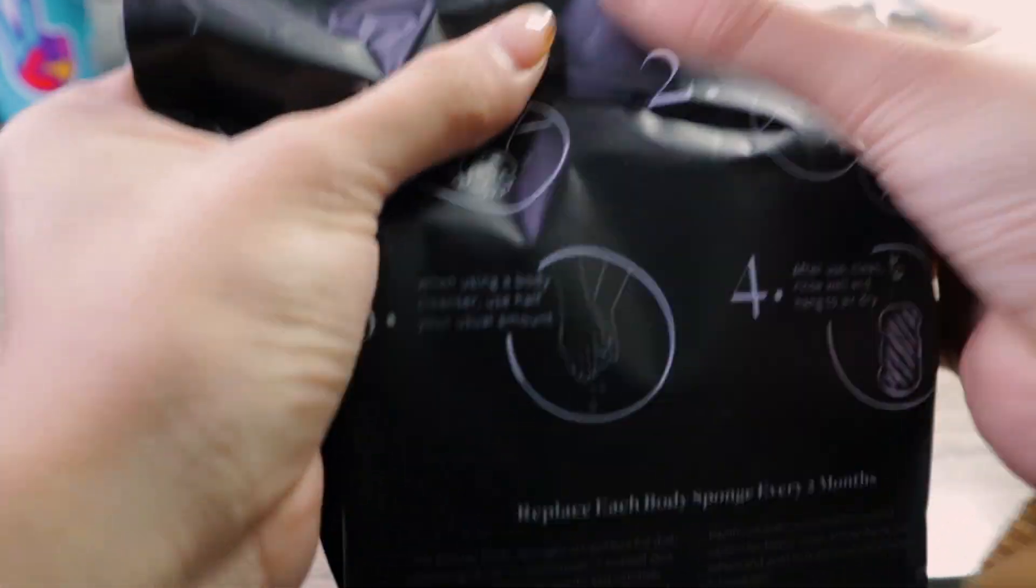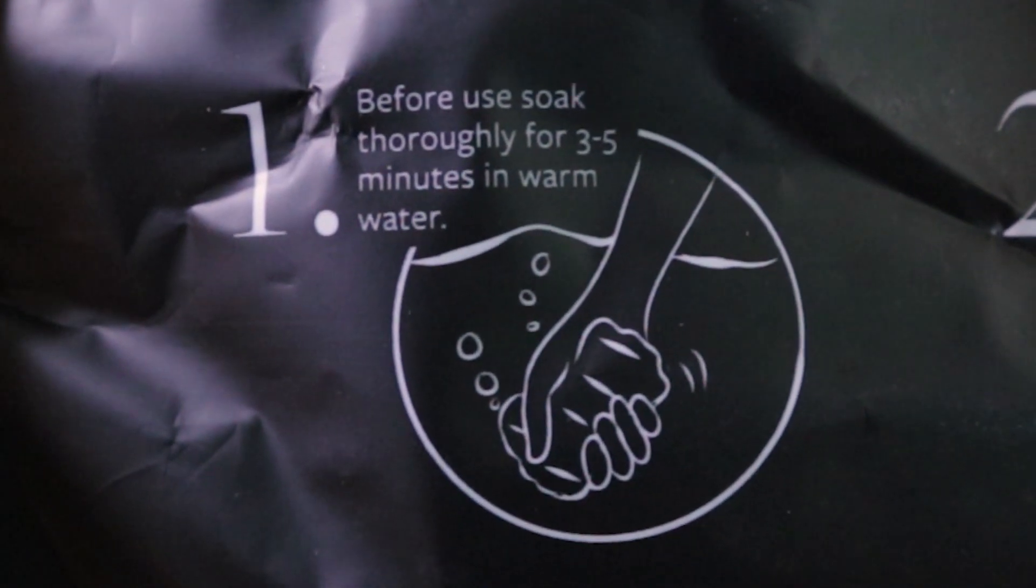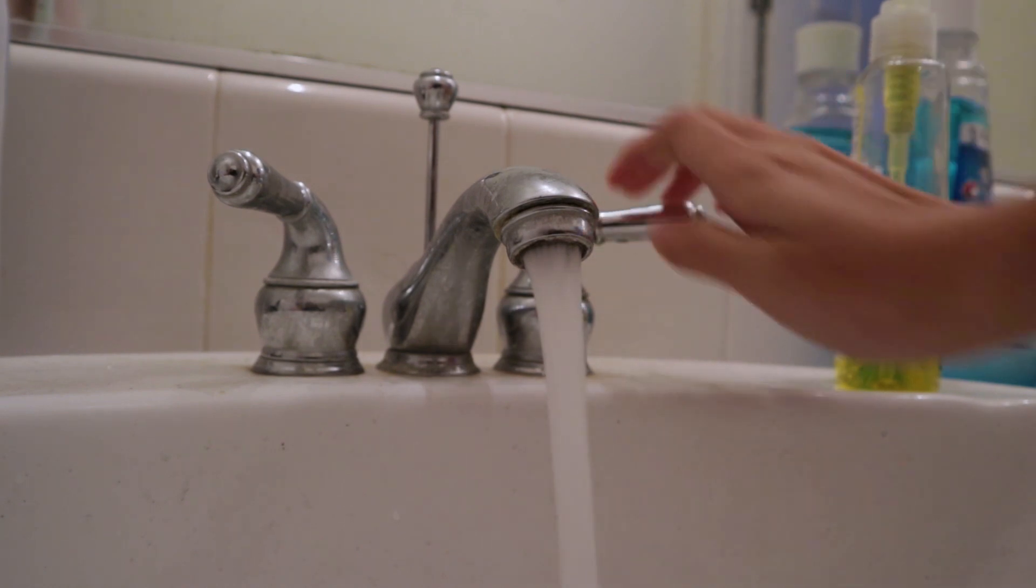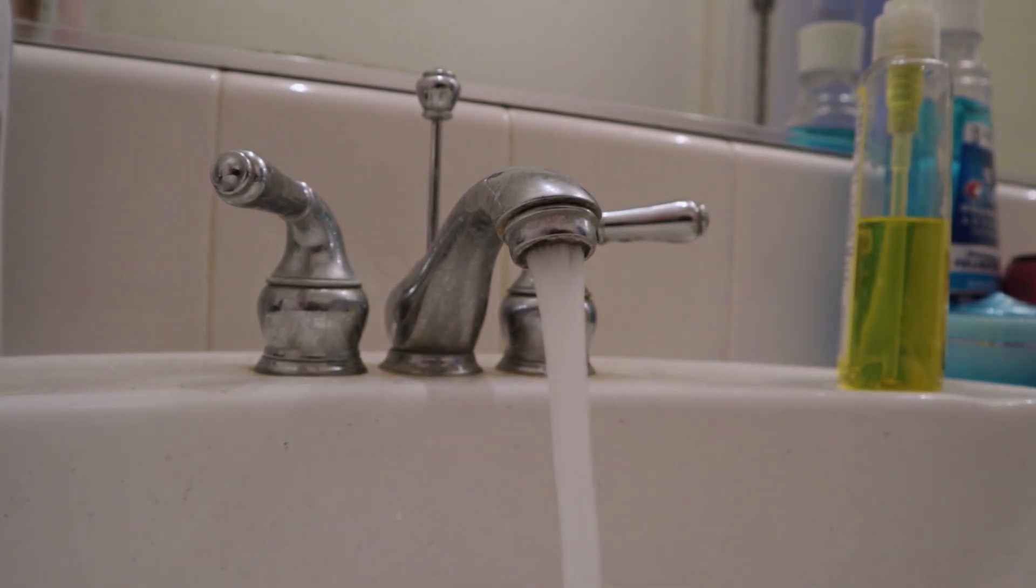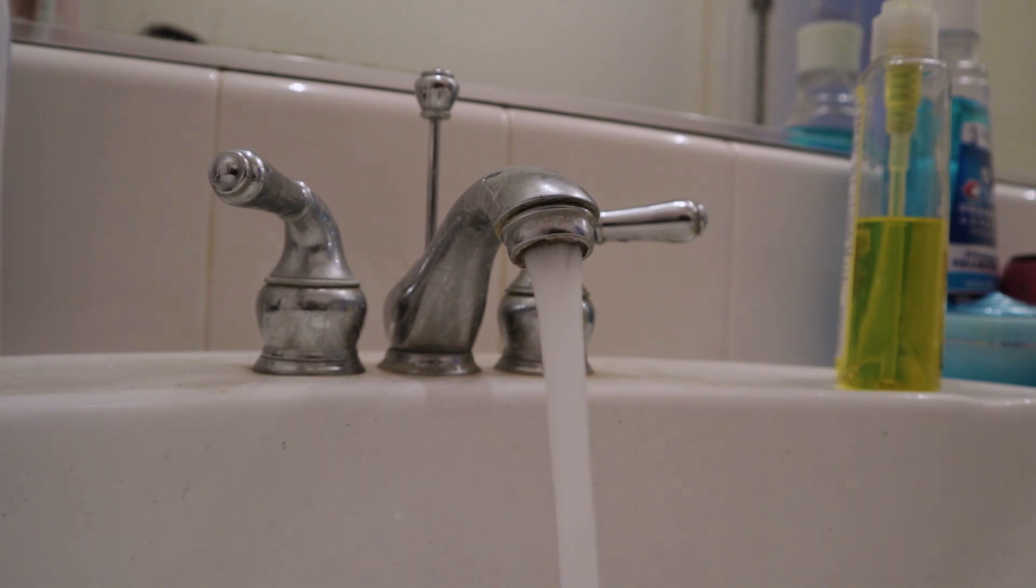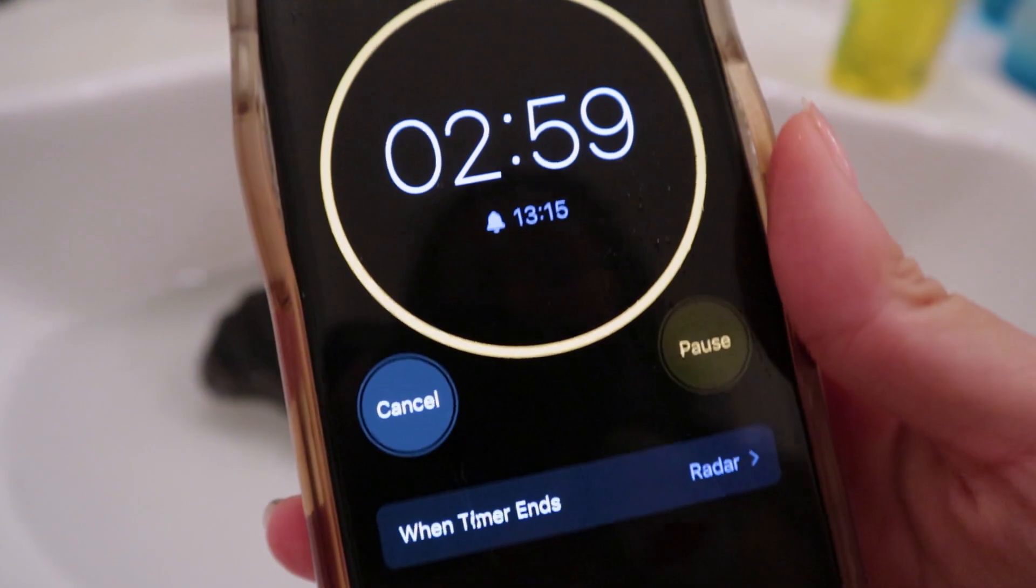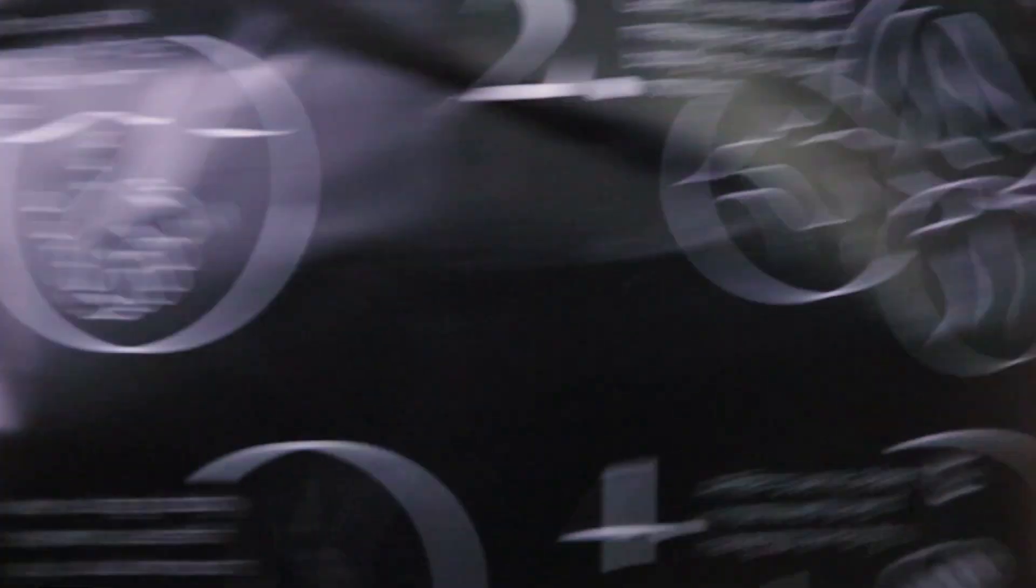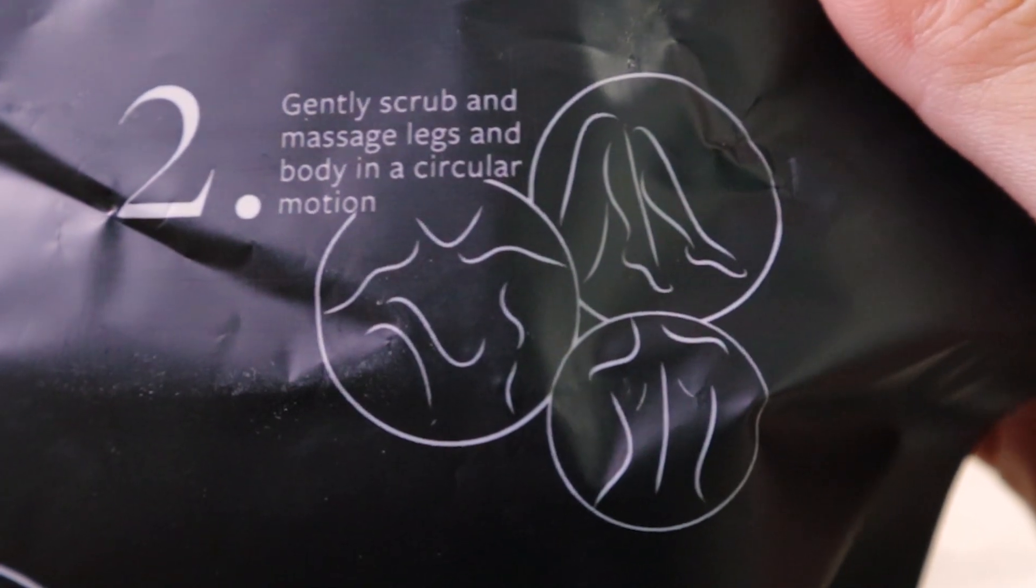So starting with instructions, before you use your sponge, you have to soak it for about three to five minutes in warm water. I used the sink because I only wanted to wash my arms because in no freaking way am I going to show you my whole entire body. So after waiting about the allotted time, I took it out and then it says to gently scrub and massage your legs and body in a circular motion.